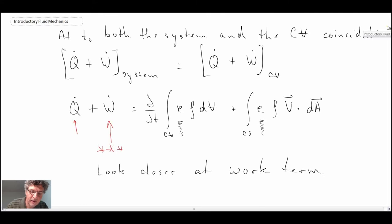We ended the last segment putting together the equation for the control volume formulation for the conservation of energy, or the first law of thermodynamics. We saw that we had the work term, and we need to deal with the work term.